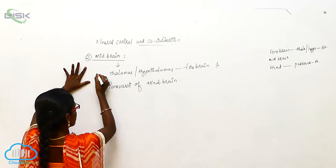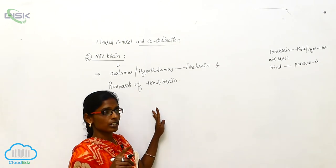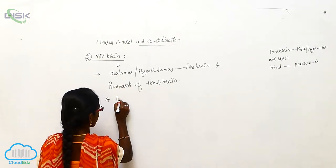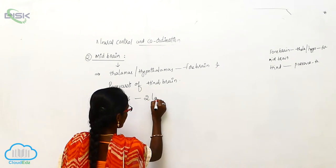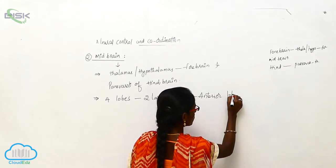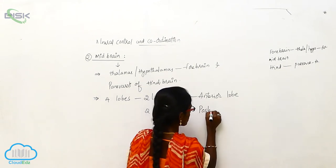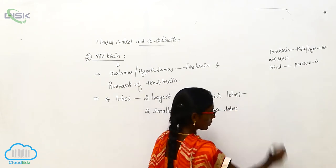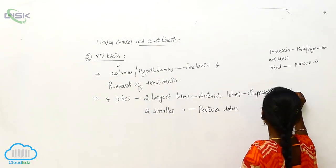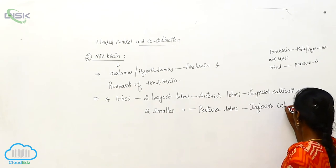The midbrain consists of four lobes: two largest lobes called anterior lobes, also known as superior colliculi, and two smallest lobes called posterior lobes, also known as inferior colliculi.